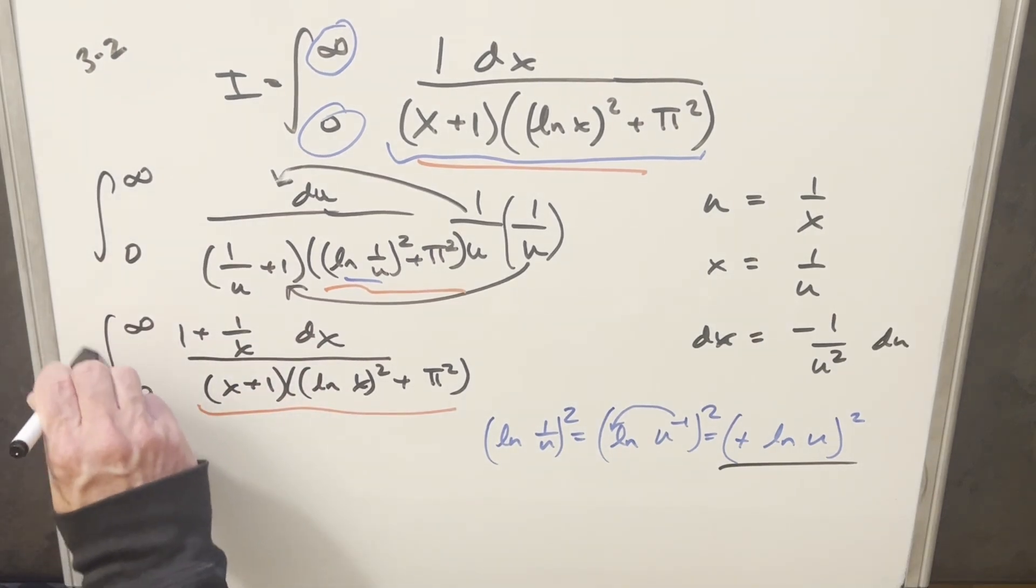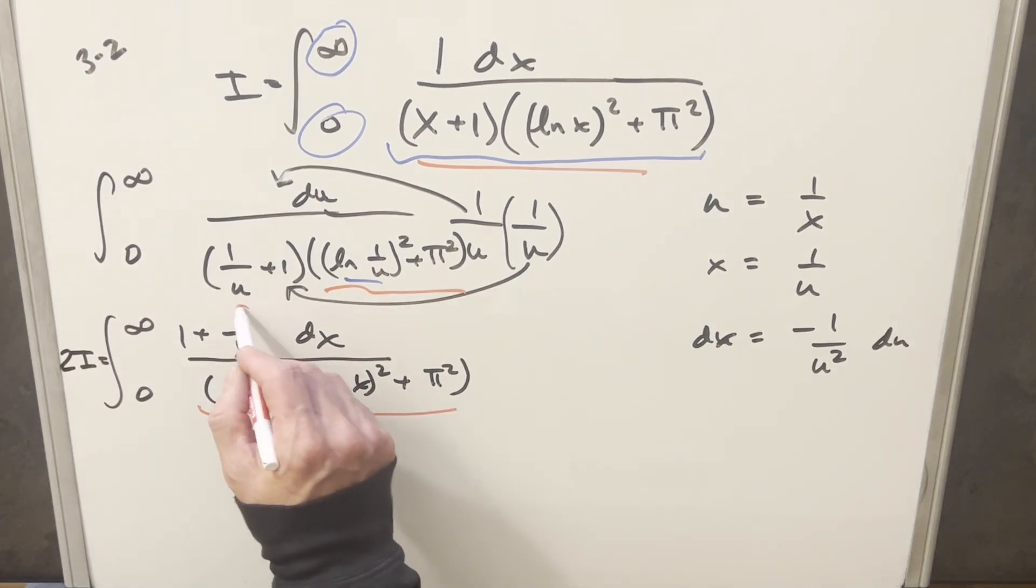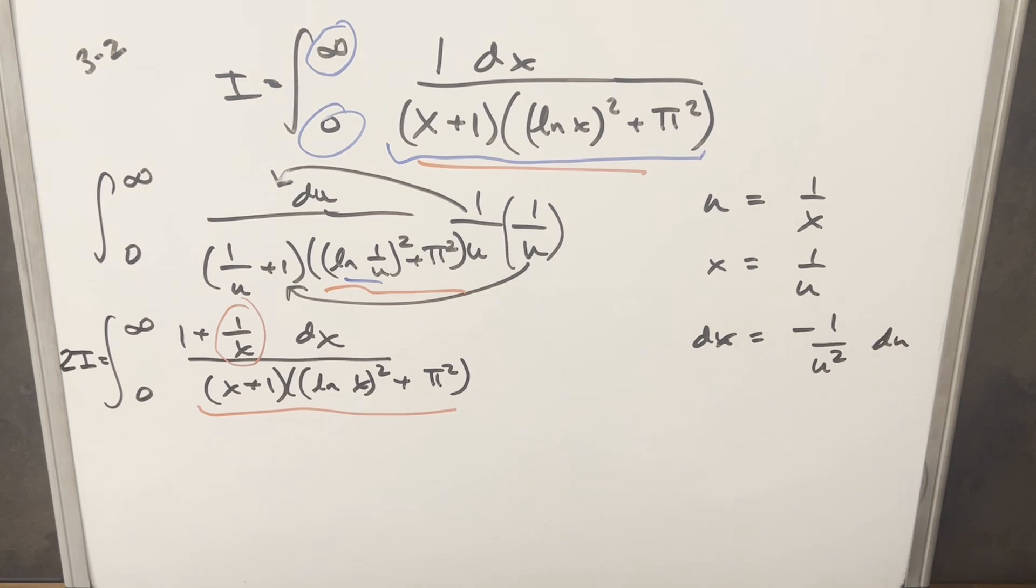But then doing this, this is actually now two copies of the integral, right? So now I've expressed this as 2i over here. And then I kind of just want to fix this 1 over x here. I don't really want that there. So what I'm going to do is just multiply in. I can multiply by 1, multiply in by x over x here.